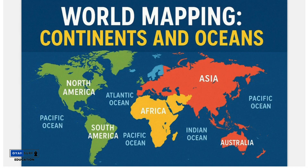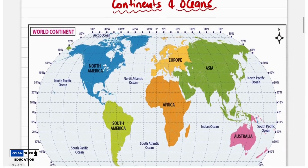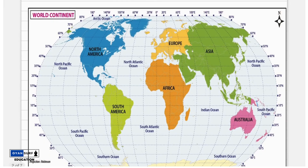As we studied in the previous class about longitudes and latitudes, a globe can be represented by a 2D representation which is a map. Here is the map of the world — the different colors represent land masses and the white color in between represents the oceans.